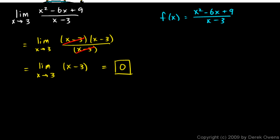The graph of f(x) would look just like a graph of x - 3, except there would be a hole in the graph at x = 3.